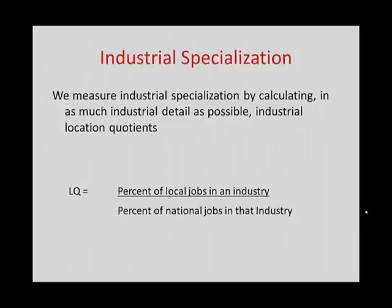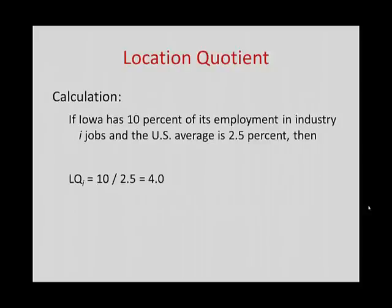Here is an example. Let's say Iowa has 10% of its employment in an industry — a major industry producing for export sales. Industry I has 10%, and the U.S. average is 2.5%. So the location quotient is simply Iowa's percent, 10%, divided by the national percent, 2.5%, which equals 4. A location quotient of 1 would mean we have the same percentage as the national average, indicating no specialization. But a 4 means we have 4 times more employment than the national average would have suggested in this industry.